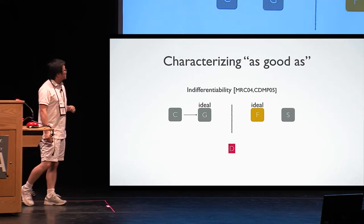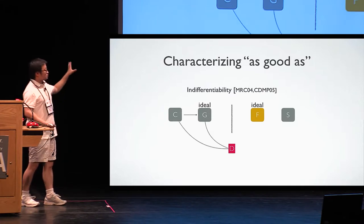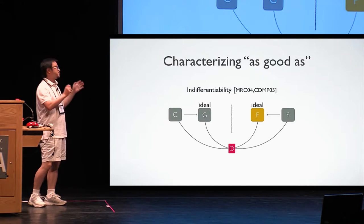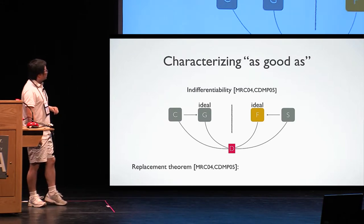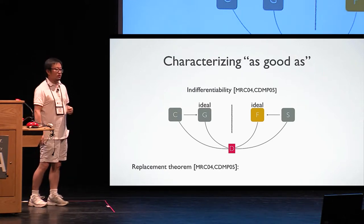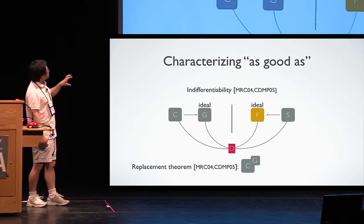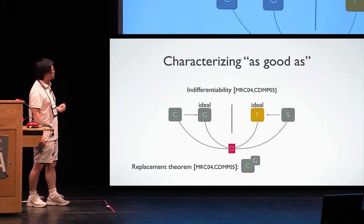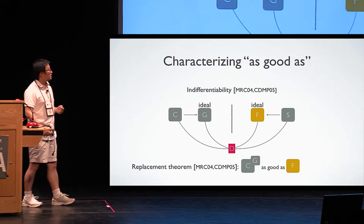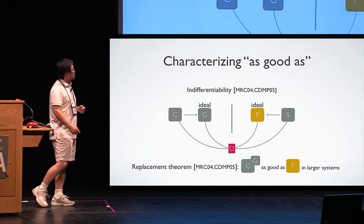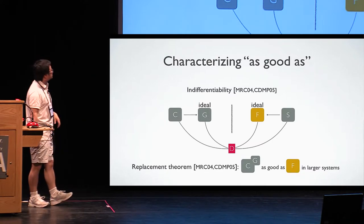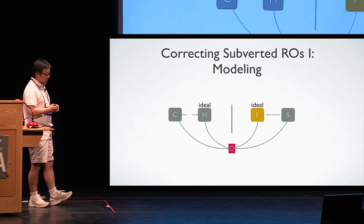And when the distinguisher communicates with real world or ideal world, the distinguisher cannot tell them apart. And what's very nice about it is that there was something called a replacement theorem and was proved before that the actual construction C by oracle access to the ideal object G actually indeed can replace the ideal object F in larger systems. So we can safely just plug into other places.